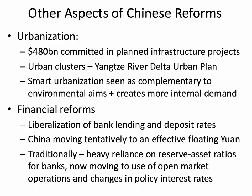In terms of financial reforms, China is moving tentatively towards a slightly more Western-style banking and financial sector. They're liberalising bank lending and deposit rates, meaning that interest rates on loans and savings are set more by the market rather than by the state. They're gradually moving towards a floating exchange rate — from a fixed to a managed float, effectively a floating yuan in the next year or two. And the traditional reliance on reserve asset ratios — where Chinese banks had to keep 17% of their deposits in cash — is now being replaced by the use of open market operations, with the central bank intervening to affect banking system liquidity and moving towards more market-set interest rates.